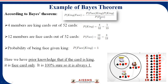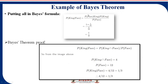After finding probability of king and probability of face, we identify probability of face given king. Since a king card is always a face card, the probability equals 1. Putting all values into Bayes' theorem: 1 × (1/13) divided by (3/13) gives a final answer of 1/3. So 1/3 is the probability of picking a king card that is also a face card.